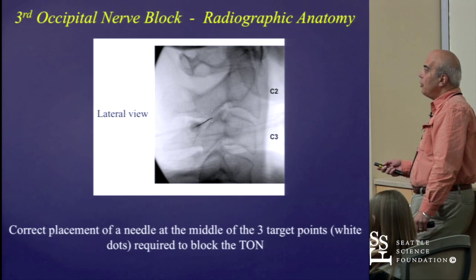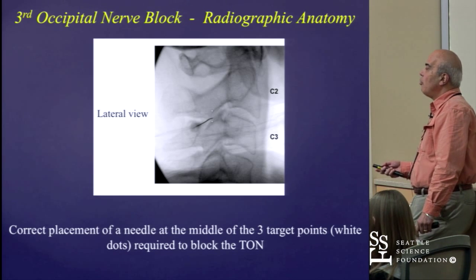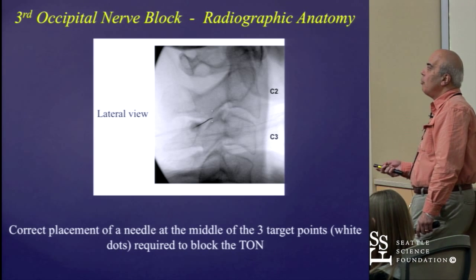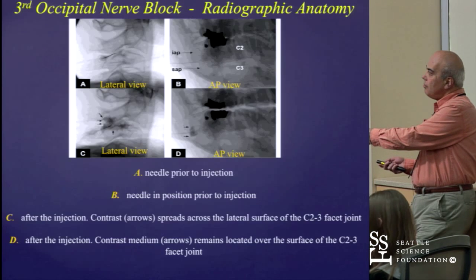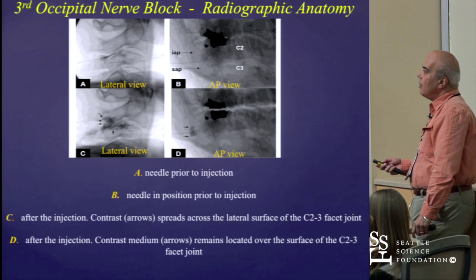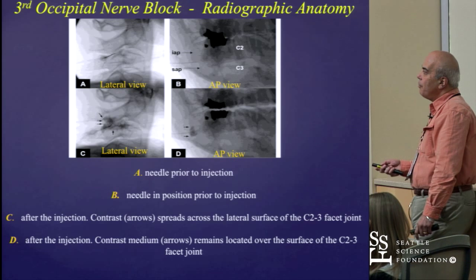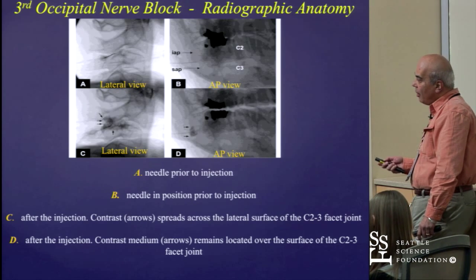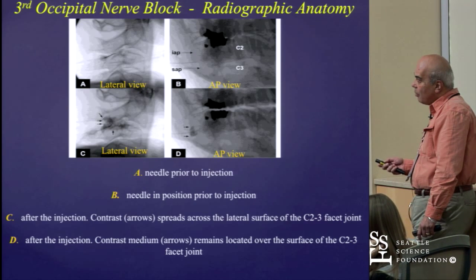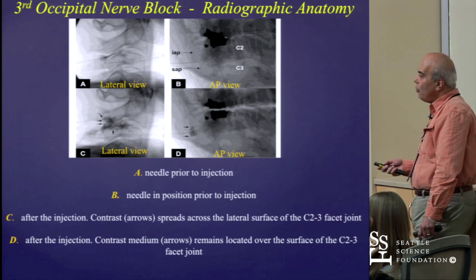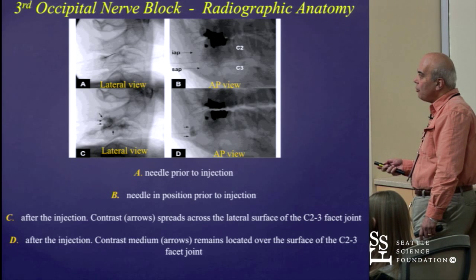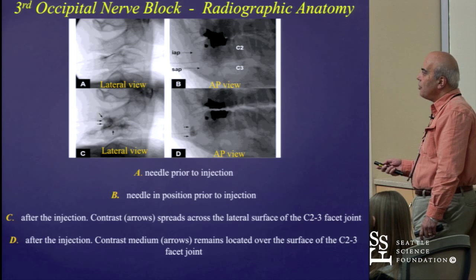This is the correct needle placement for the third occipital nerve block at one of the three target points, with white dots identifying the other areas where the procedure should be performed. On this lateral view, you can see the needle placement before injection. On the AP view, you can identify the area by seeing the C1-2 joints, with the C2-3 facet joint immediately below. The lateral view with contrast shows the spread along the lateral surface of the C2-3 facet joint, and the AP view after injection shows the contrast remaining located over the surface of the C2-3 facet joint.